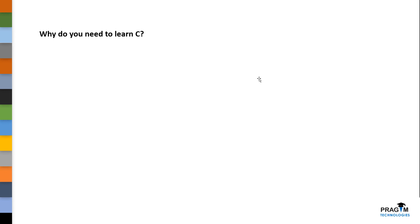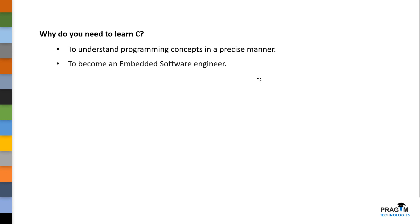So finally, why should we need to learn C? If you are a beginner and want to become a good programmer, you can start with C programming, because with C programming you can understand the concepts of programming in a precise manner. And if you want to become an embedded software engineer, then you must need to learn C programming, because C is widely being used in embedded software development.